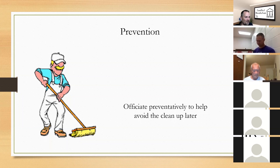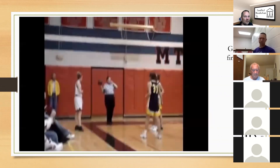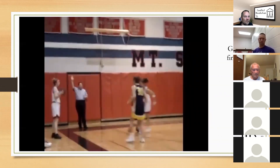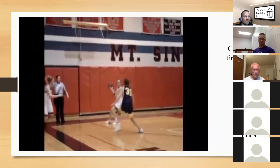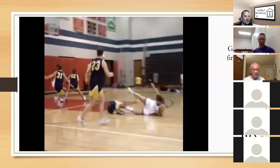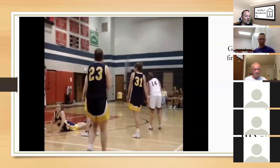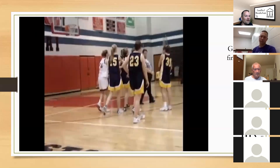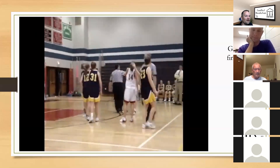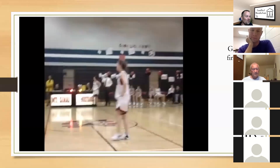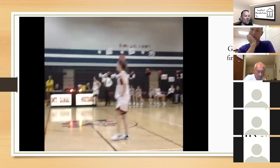Most importantly, when it comes to resolving conflict — avoid it from the get-go. If we officiate preventatively, we don't have to clean up the mess later. In the clip with Katie Ferris: there was a no-call, then there was a call. Why did she push? Because she fell down and tripped her first — if you call that first foul, the second one doesn't happen. The first one is maybe just a regular common foul.